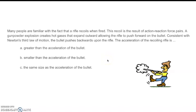So if you ever shot a gun, a rifle recoil, the recoil is a result of action-reaction force pairs. A gunpowder explosion creates hot gases that expand outward along the rifle to push forward on the bullet. So, consistent with the third law of motion, the bullet pushes backwards upon the rifle. So the acceleration of the recoiling rifle, so the bullet shoots out, and then the acceleration on the rifle.